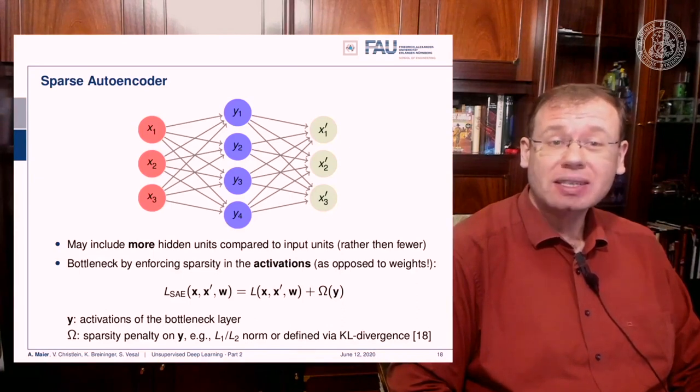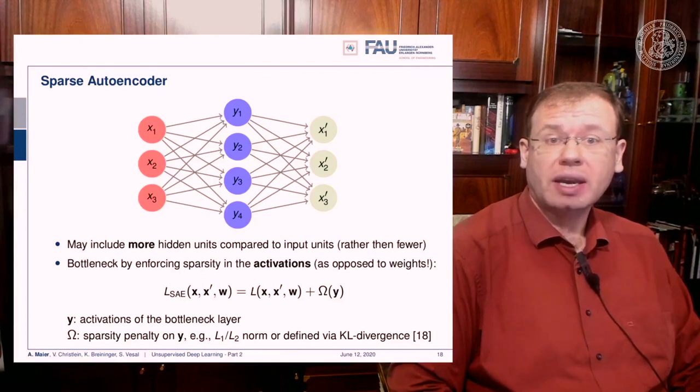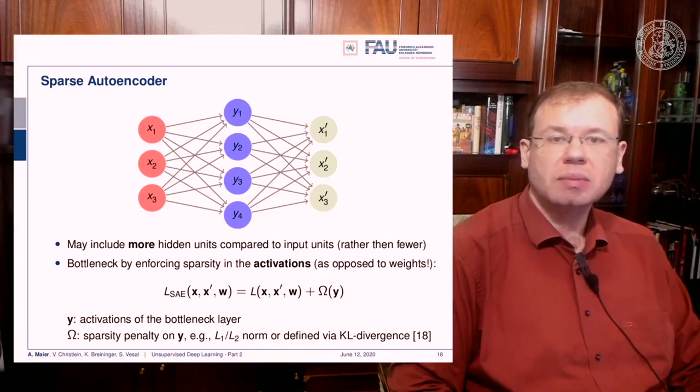Remember, the sparsity in the sparse autoencoder stems from the sparsity in the activations, not from the sparsity in the weights. Because if you look at your identity, then you see this is simply a diagonal matrix with ones on the diagonal, so this would also be a very sparse solution. So again, enforce the sparsity on the activations, not on the weights.